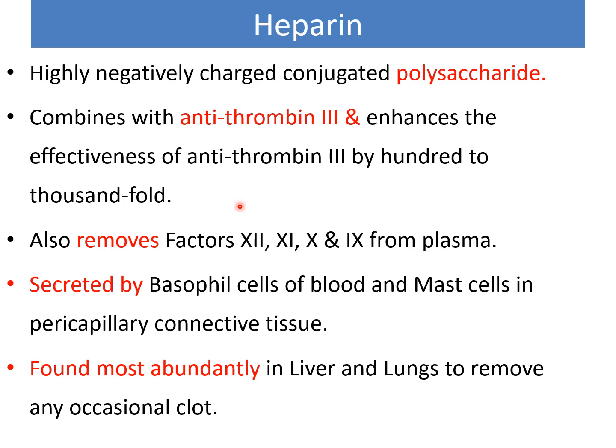Heparin also removes factors 12, 9, 10, and 11 from plasma by adsorbing them, as it is a large, highly negatively charged polysaccharide that adsorbs these activated factors. Heparin is secreted by basophil cells of the blood and mast cells in the pericapillary connective tissue. The heparin-producing mast cells are found most abundantly in the liver and the lungs, where sluggish blood flow and clot formation can otherwise occur.